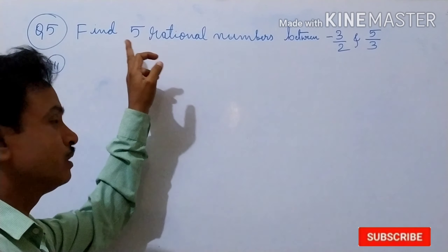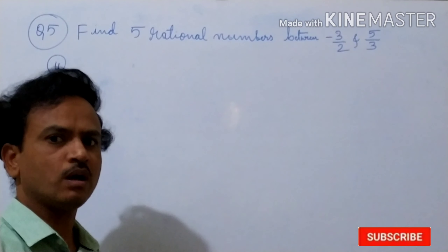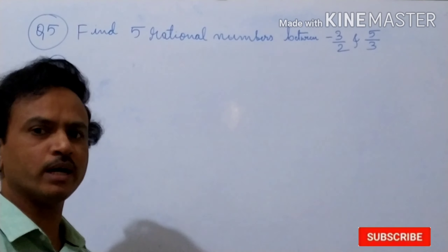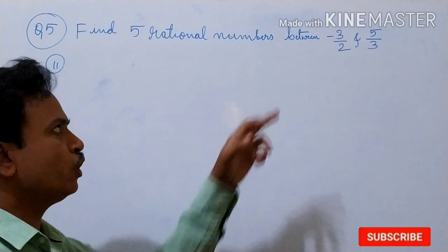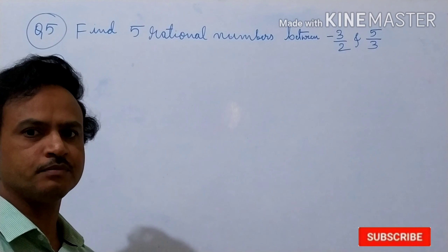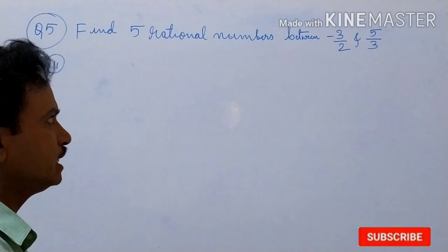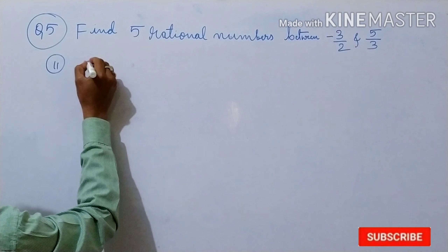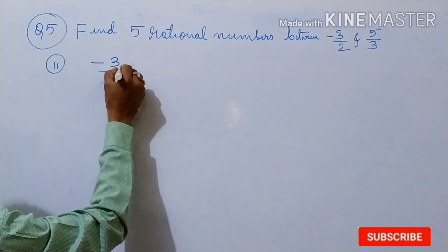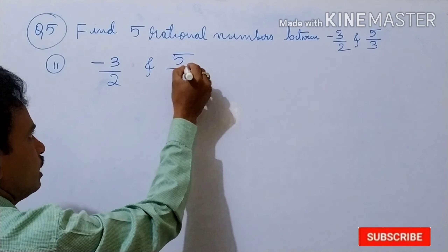Question number 5: Find 5 rational numbers between minus 3 by 2 and 5 by 3. Now your denominator numbers — what are they? 2 and 3. What is the LCM of 2 and 3? First we will write down the question: minus 3 by 2 and 5 by 3.